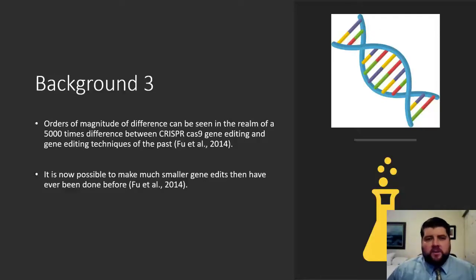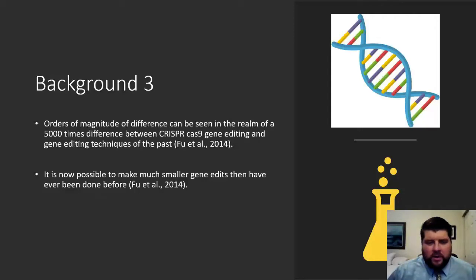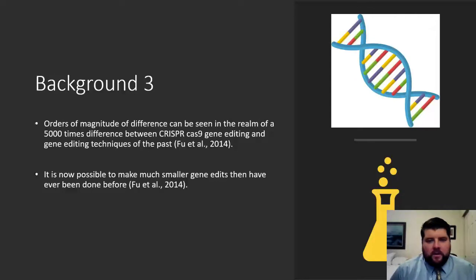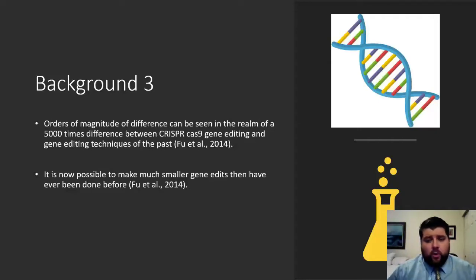There's an orders of magnitude difference in what can be done with CRISPR versus other genetic engineering techniques — about a 5,000 times difference. We're now able to do much smaller gene edits than ever before. Rather than destroying an organism to genetically alter it, we can do individual gene edits. So if an individual does not like a certain gene in their body, they can change that, supposedly.